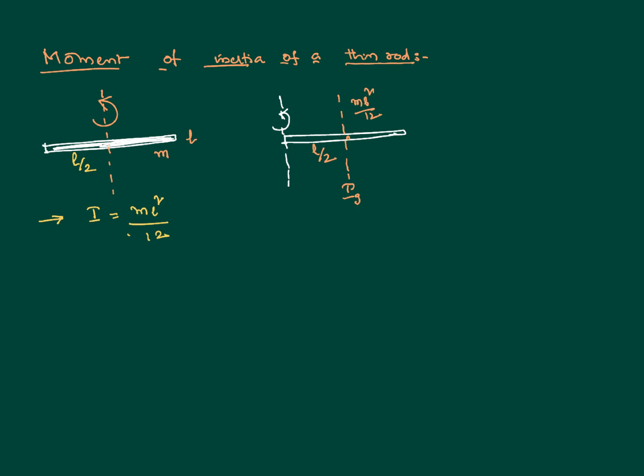Now it is very clear that these two axes are parallel to each other. So to find the moment of inertia, we can use the parallel axis theorem as Ig plus mR square, where r is the perpendicular distance between the two parallel axes.